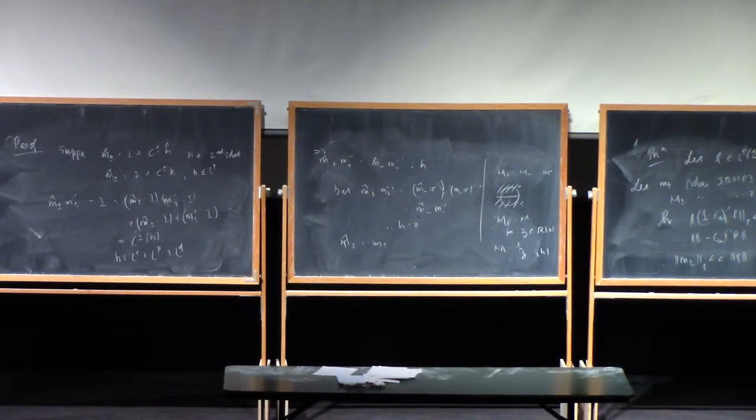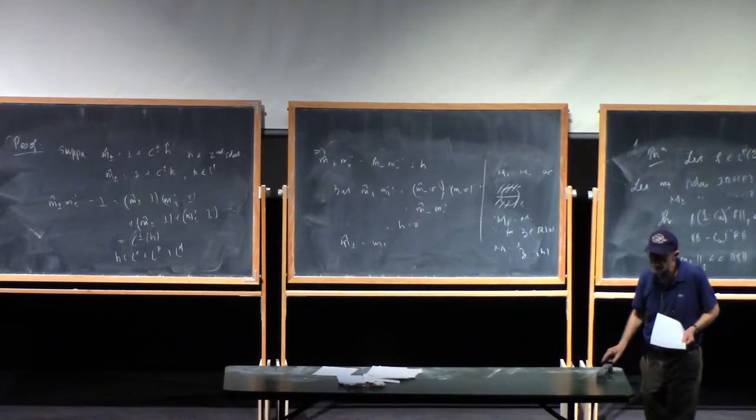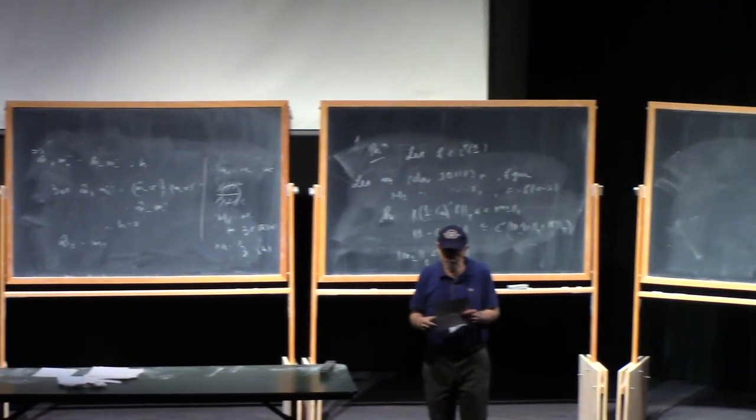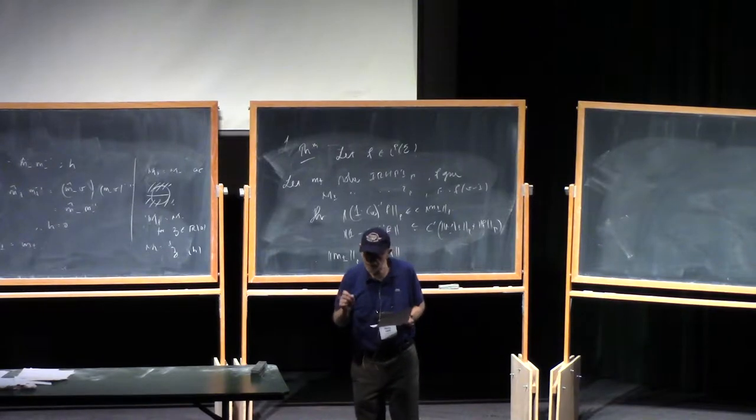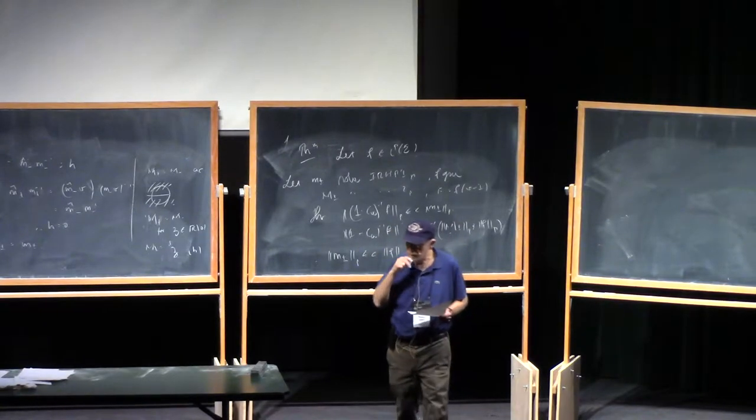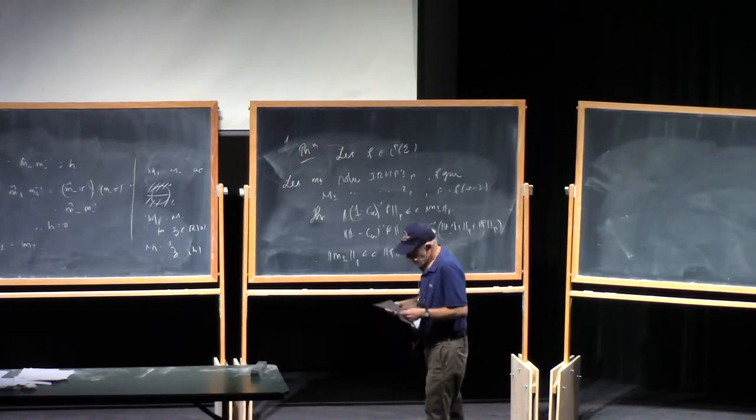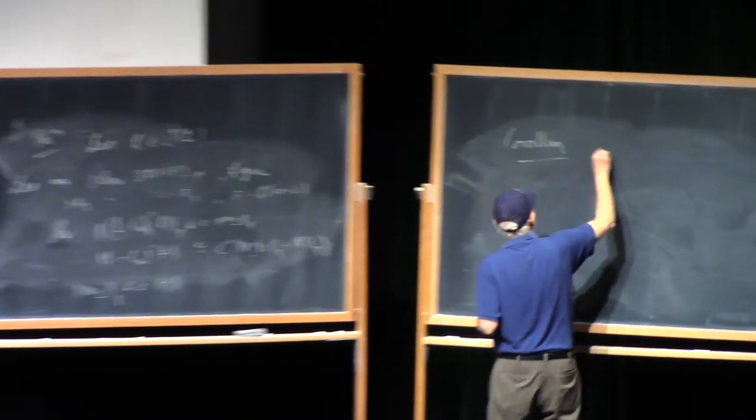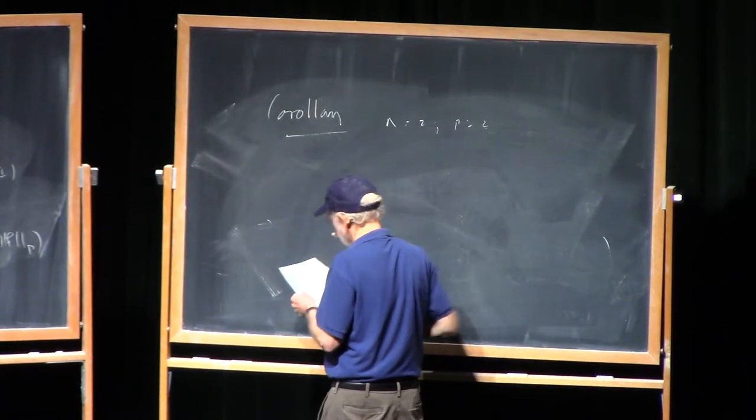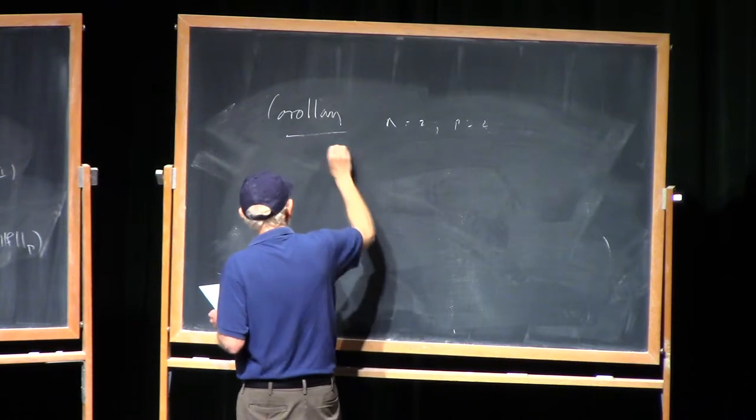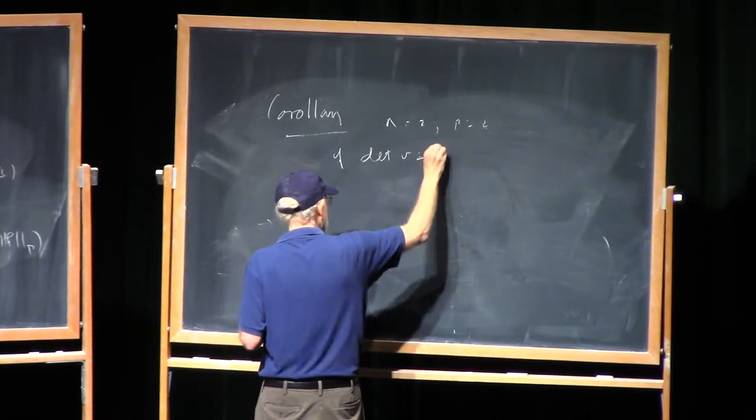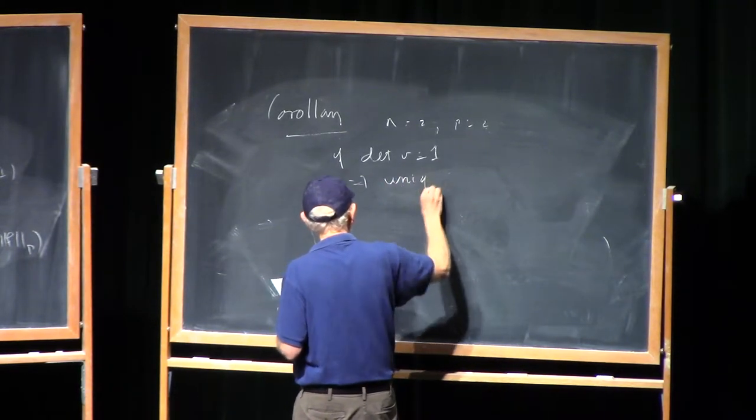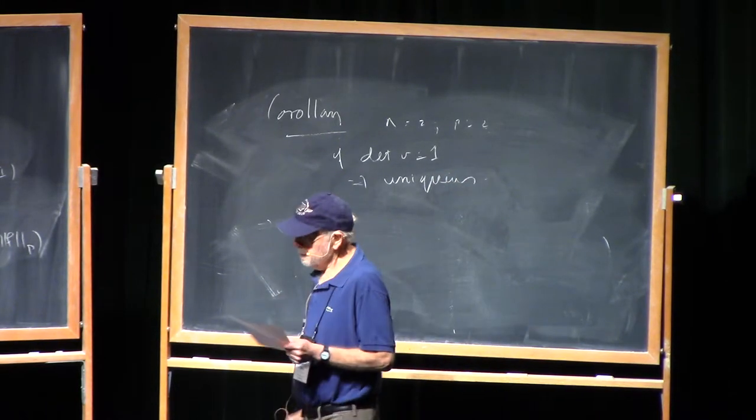Now, the special features of Riemann-Hilbert problems for one by one matrices, the scalar case, I'll say more about that later, and also for problems which are two by two. Many of the Riemann-Hilbert problems, but by no means all, involve two by two matrices. But here is a corollary. Suppose n is two and p is two. And if the determinant of V is just identically one, then you have uniqueness.